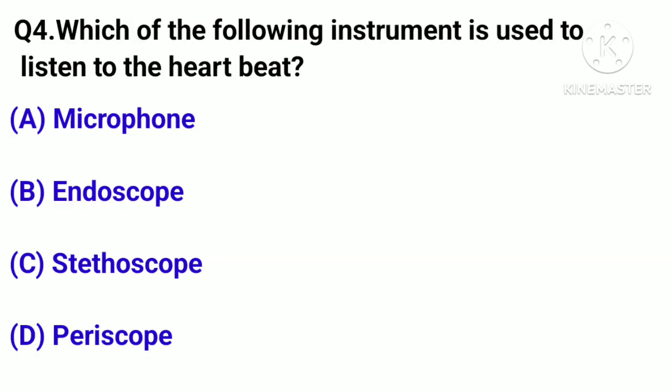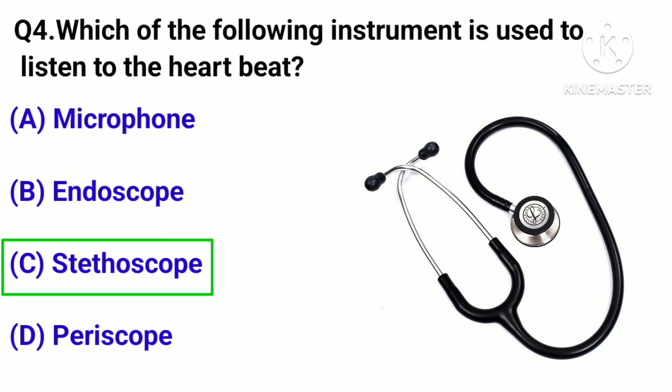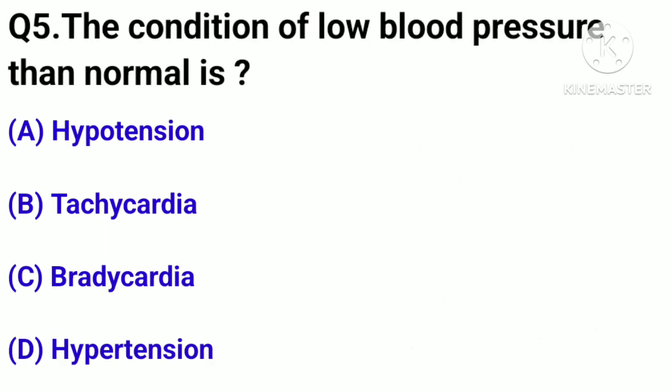Question number 4. Which of the following instruments is used to listen to the heartbeat? Option A: Microphone. Option B: Endoscope. Option C: Stethoscope. Option D: Periscope. Correct answer: Option C.